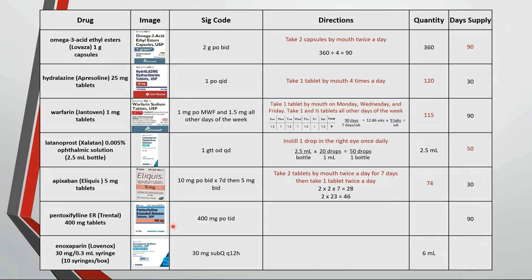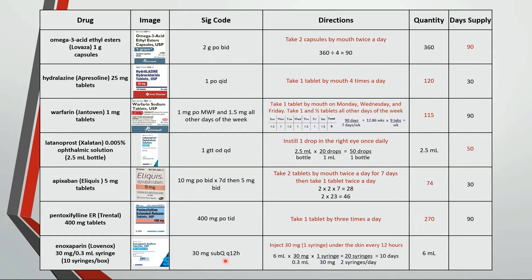This is take one tablet by mouth three times a day. 90 times 3 is 270 tablets. The last one here is inject 30 mg or one syringe under the skin every 12 hours. We need 6 mL, but let's convert that to syringes to see how many we need to grab off the shelf. Set up the conversion factors so the units cancel out and we're left with syringes. Directions call for 2 syringes a day, so 20 divided by 2 is a 10-day supply.